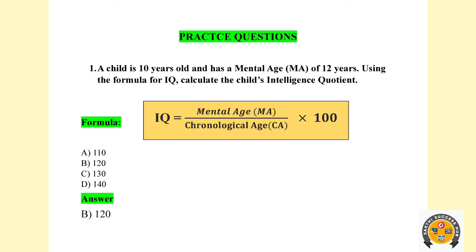Practice question: A child is 10 years old and has a mental age of 12 years. Using the formula, calculate the IQ. The child's mental age is 12 and chronological age is 10, so we apply the formula to calculate the answer. If you know the formula, you can easily find the answer.